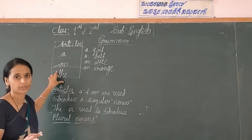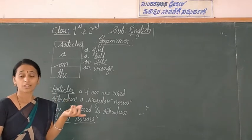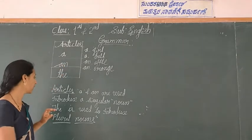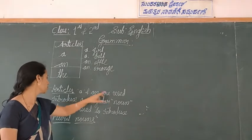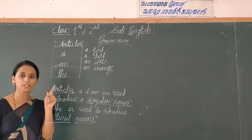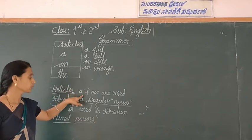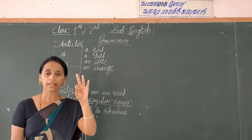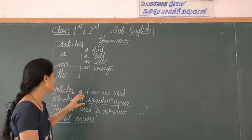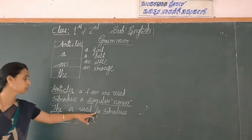'The' is used in plural form - for example: the cats, the dogs, the cows, the fruits. We use 'the' in plural form. 'A' and 'an' are used in singular form. Articles 'a' and 'an' are used introducing a singular noun. When the noun is singular, we use 'a' or 'an'. 'A' is used before consonants, 'an' is used before vowel sounds - A, E, I, O, U. 'The' is used to introduce plural nouns.